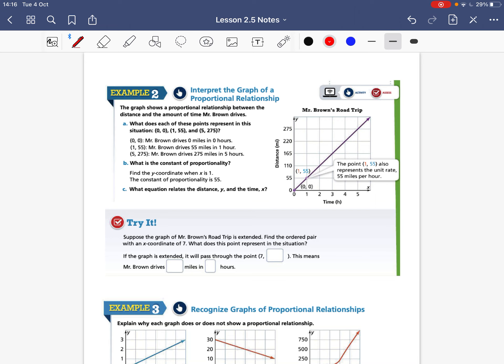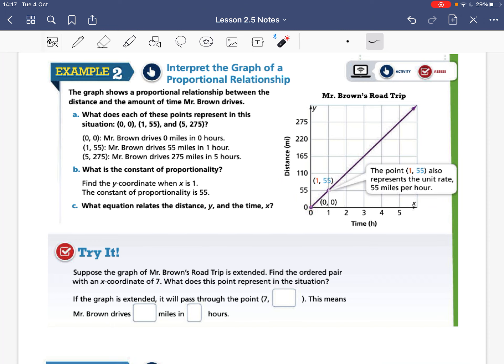All right last page and then we'll get going. So the graph shows a proportional relationship between the distance and the amount of time Mr. Brown drives. So part A what does each point represent in this situation? So I'm just going to talk about this there's no calculations that are involved so it's asking us what's happening at this point here. Well at this point zero zero it's telling us that he's covered zero miles and he's only driven for zero hours. So at zero zero nothing's happened. At one comma fifty five tells us that he's driven for one hour and he's covered a distance of fifty five miles. Two or excuse me five comma two seventy five means at five hours he's covered a distance of seventy five miles.